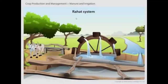In the rahat system, with the help of animals, a lever is rotated, which simultaneously rotates a wheel that collects water from one end and channels it to the agricultural field through a lane at the other end.